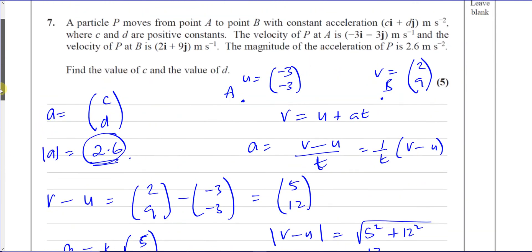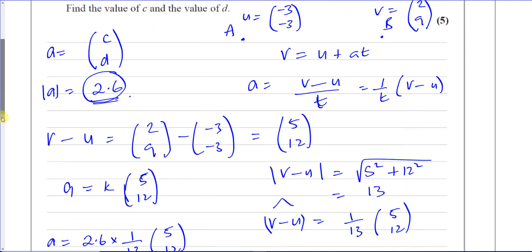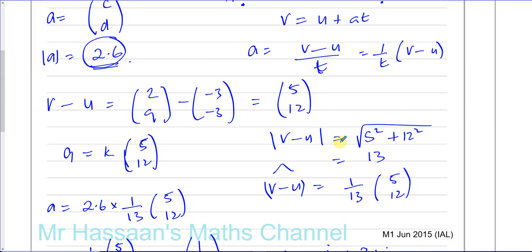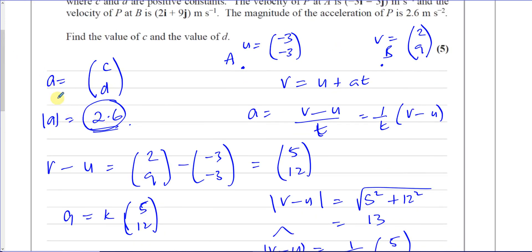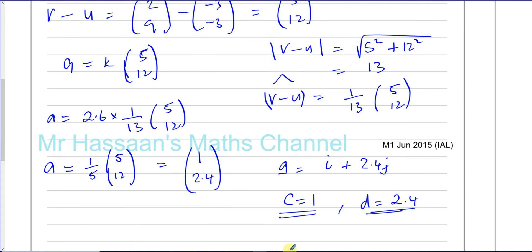To recap: because acceleration equals final velocity minus initial velocity over time, our acceleration vector must be some multiple of V minus U. V minus U gives (5, 12), so we want a vector in that direction with magnitude 2.6. We find the unit vector by dividing by its magnitude of 13, then multiply by 2.6 to get the correct magnitude. That gives C = 1 and D = 2.4. I hope that was clear — thank you for watching.